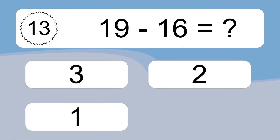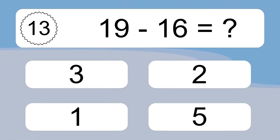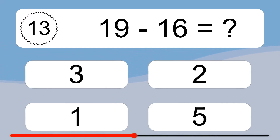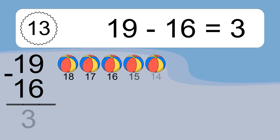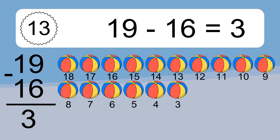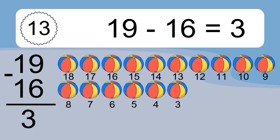19 minus 16 equals what? 19 minus 16 equals 3. Let's count it: 18, 17, 16, 15, 14, 13, 12, 11, 10, 9, 8, 7, 6, 5, 4, 3.